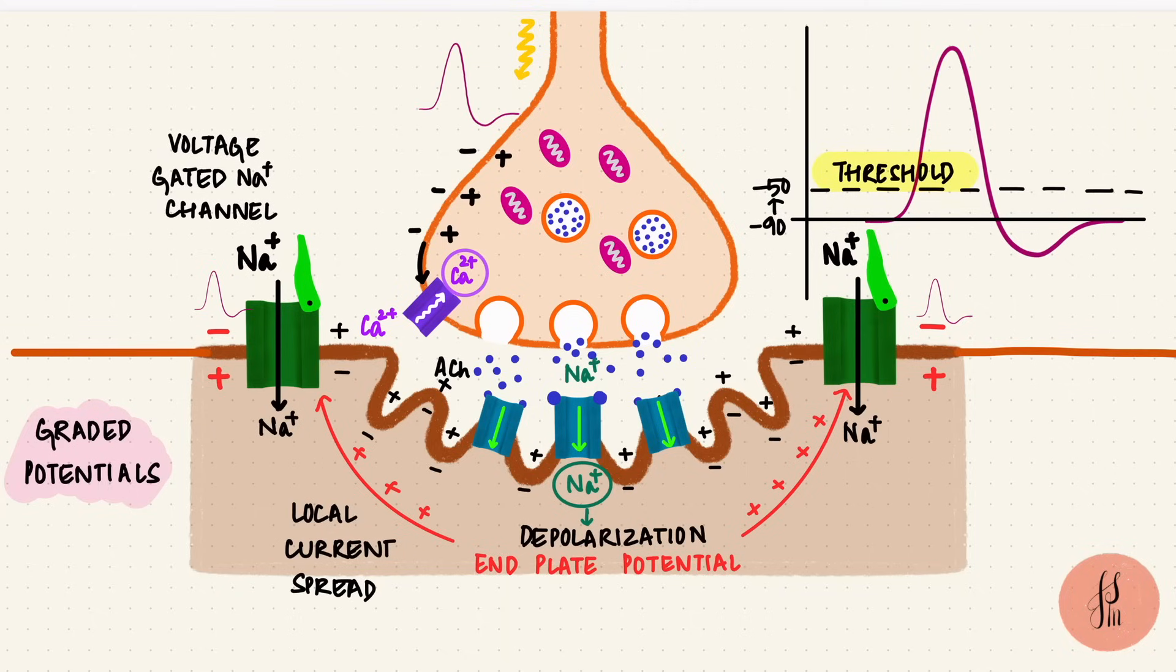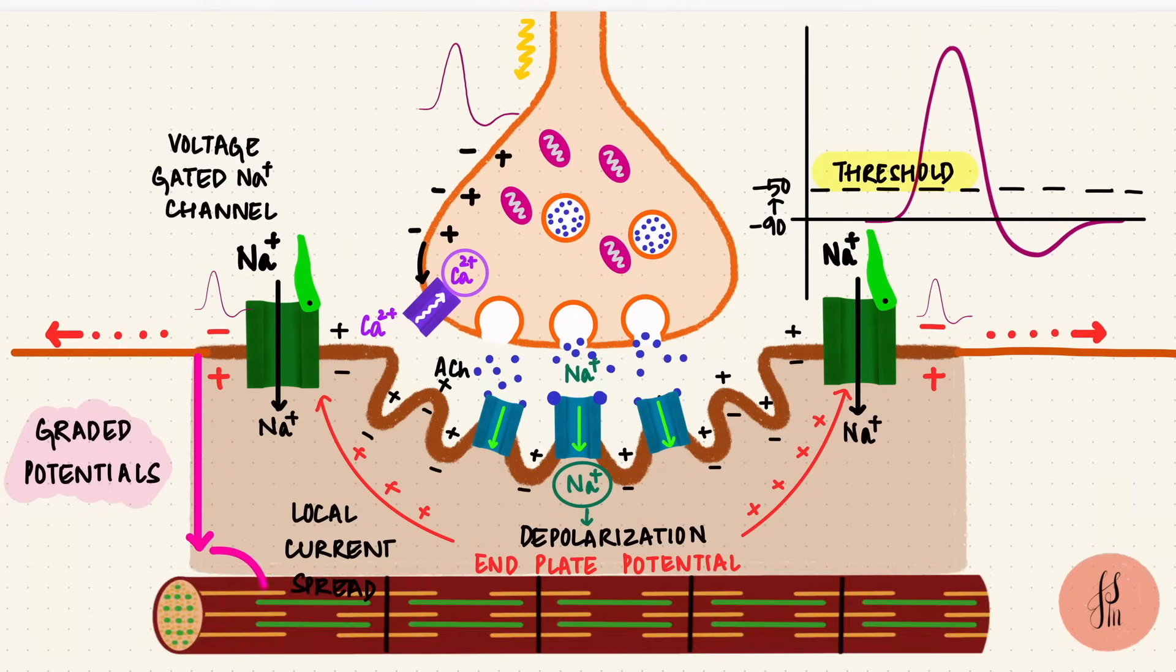Now this action potential is going to get propagated along the muscle membrane, eventually causing contraction of the muscle. That process is called excitation-contraction coupling.